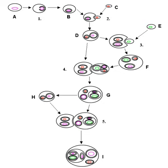Endosymbiotic bacteria fix nitrogen for their diatom hosts and in turn receive organic carbon from photosynthesis. These symbioses play an important role in global carbon cycling in oligotrophic regions. One known symbiosis between Hemiaulus spp. and the cyanobacterium Richelia intracellularis has been found in the North Atlantic, Mediterranean, and Pacific Ocean. The Richelia endosymbiont is found within the diatom frustule of Hemiaulus spp. and has a reduced genome, likely losing genes related to pathways the host now provides.